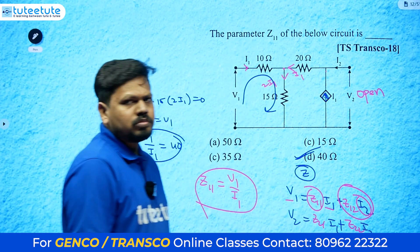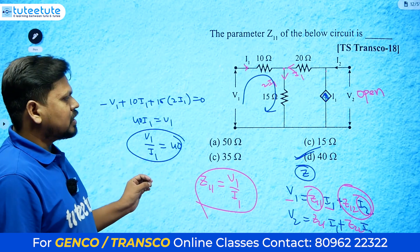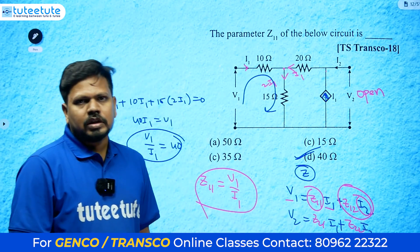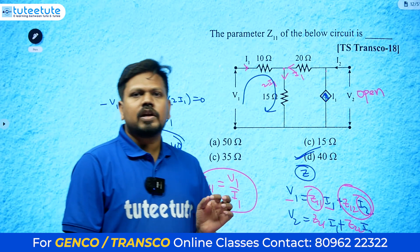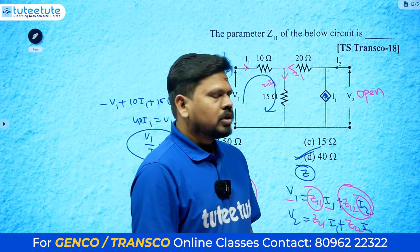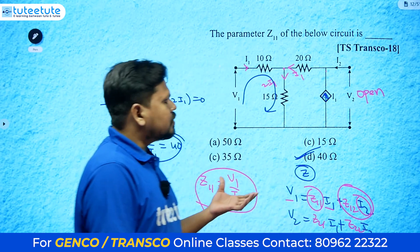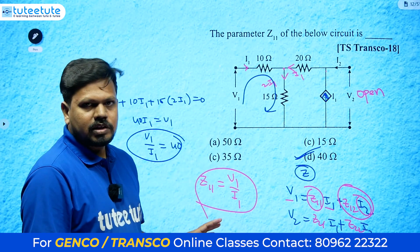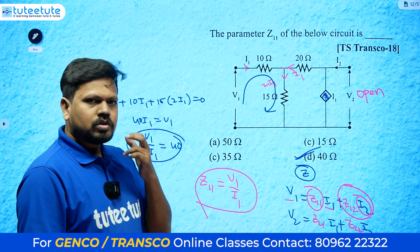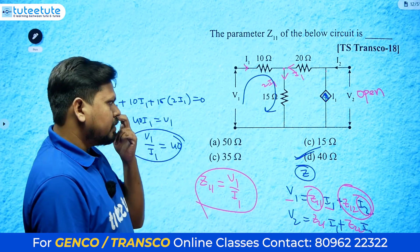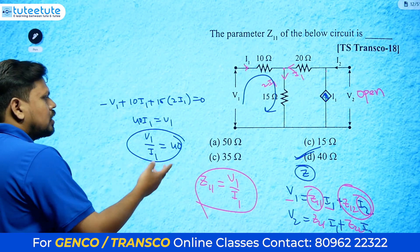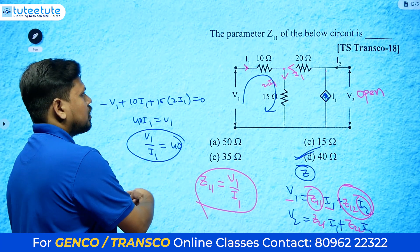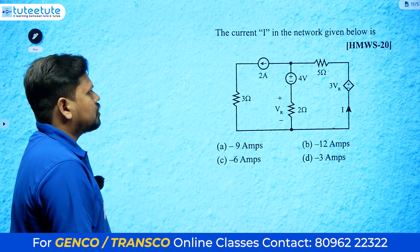Therefore v1 by i1 equals 40 ohms — that is z11 equals 40. Even though this looks like a big problem, if you understand the concept you can get the answer within one minute. This is also a previous year exam question.